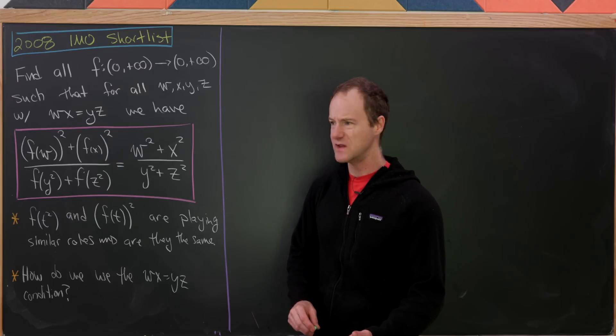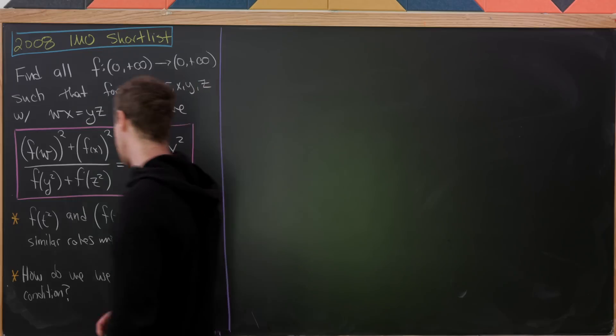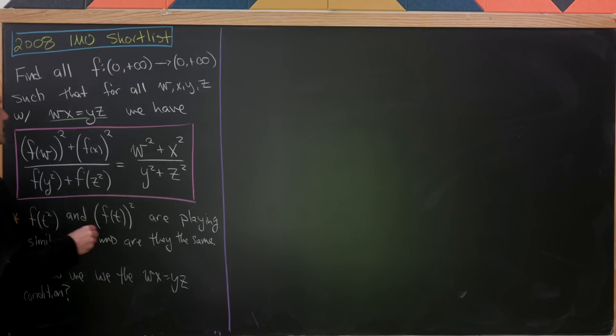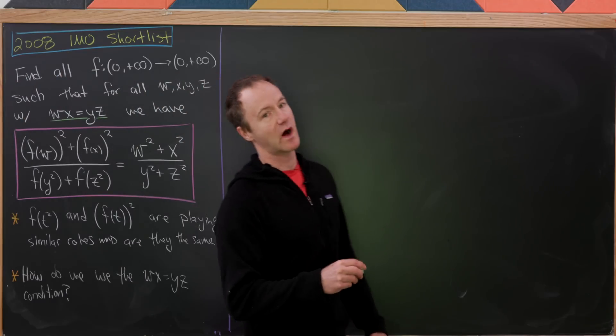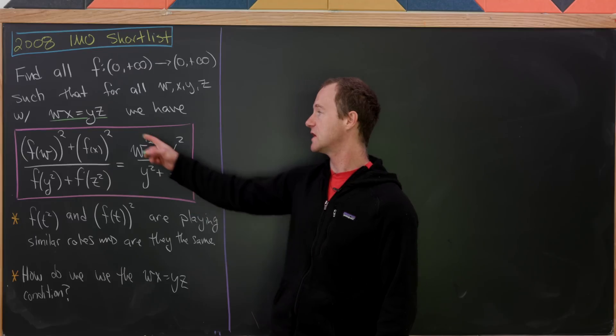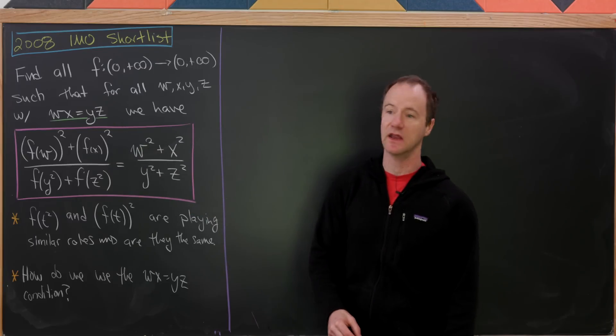Maybe one of the important things here that is easy to miss is the fact that we really need wx to equal yz. In other words, this boxed equation only holds when this underlined equation holds.